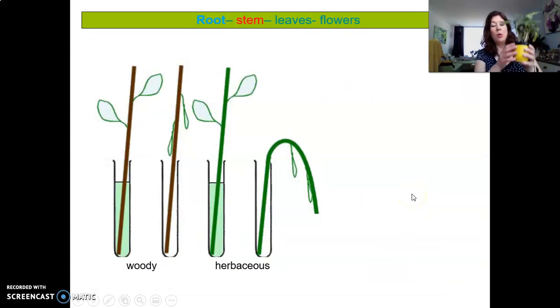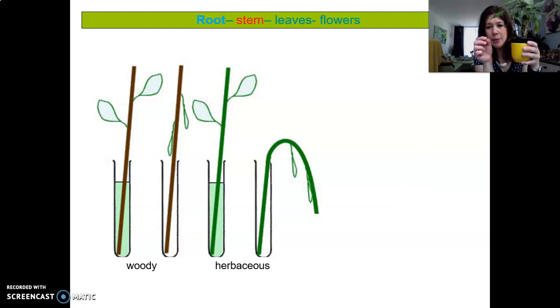Okay, so plants have two types of stems: woody stems and herbaceous stems. So what is a woody stem? What is a herbaceous stem?